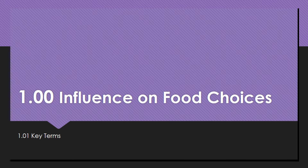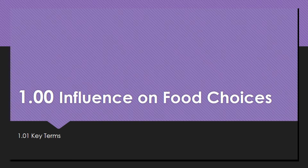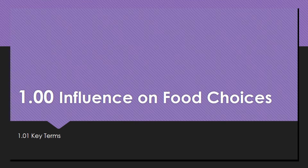Objective 1.0: understand the influences between food choices and health. We are going to continue on with objective 1.01. You should be able to remember the influences on food choices. Your central question is: what are the internal and external influences on food choices?